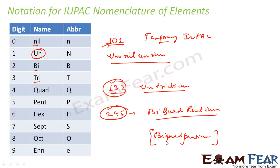So this is the IUPAC naming convention: 0 is nil, 1 is un, 2 is bi, 3 is tri, 4 is quad, 5 is pent, 6 is hex, 7 is sept, 8 is oct, 9 is non. The word 'uni' — meaning one — is the origin of 'un'. These are the digit words used to build the temporary names.